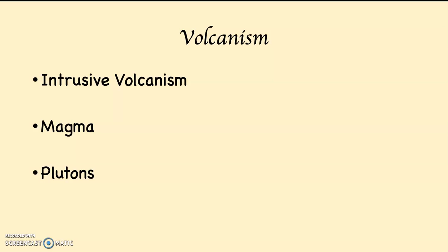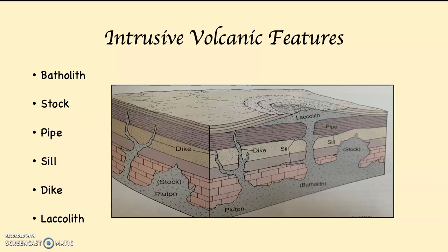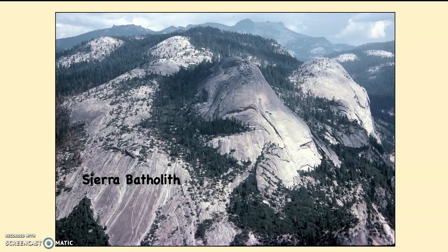Plutons are intrusive volcanic features, or intrusive igneous features. Here are the ones you need to be responsible for: batholiths, stalks, pipes, sills, dikes, and lacoliths. A batholith, which I've circled there for you, is the largest of the intrusive volcanic features. It will have to be at least 40 square miles of solidified magma. Mostly, this is going to be granitic — in other words, granite. However, it can be significantly larger than 40 square miles.